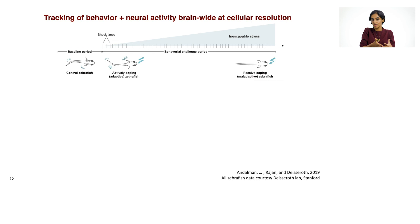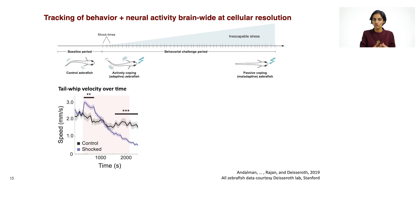When the shocks first come on, larval zebrafish will vigorously whip their tails to avoid the stress. However, they're head-fixed, and the shocks keep coming anyway. So over time, the fish lapses into a state where they don't struggle anymore — they're not whipping their tails anymore — and that state is called passive coping. There are two behavioral phases here. We've taken the tail whip velocity, averaged it over different fish, and plotted that as a function of time. In pink is the duration of the behavioral challenge period, in black is the average tail whip velocity for control fish, and in blue that for shocked fish.